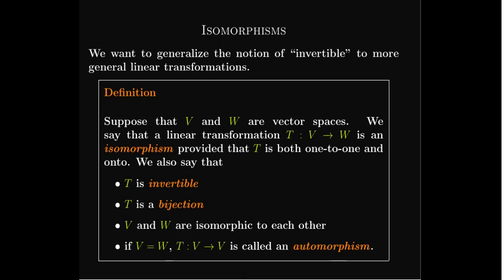We could also say that the vector spaces V and W are isomorphic to each other. And if the codomain is the same as the domain, we have a more special word for it — we call it an automorphism.